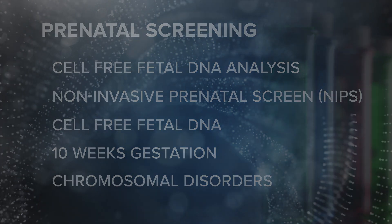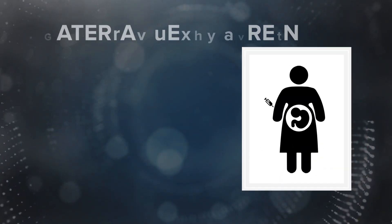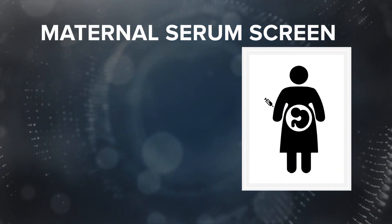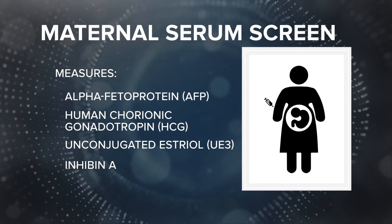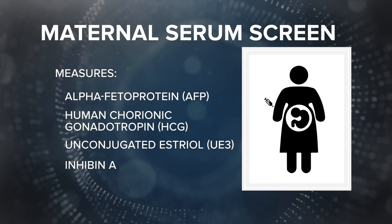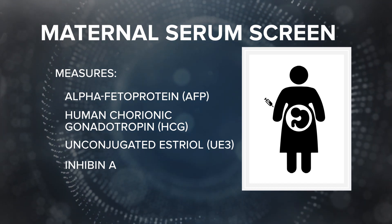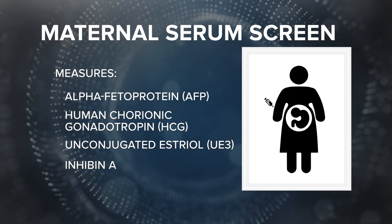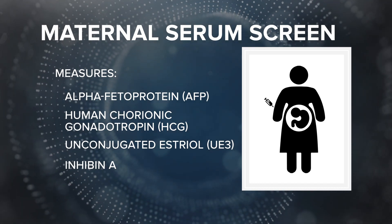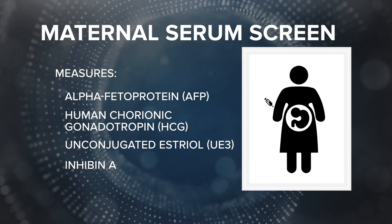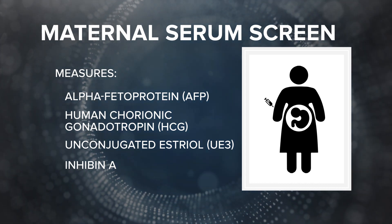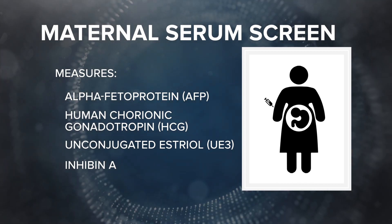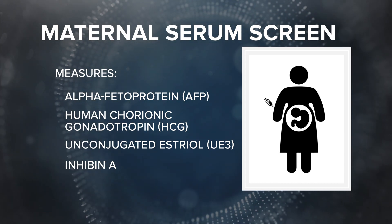A third type of screen, maternal serum screening, is done using a blood draw from the mother's arm during the second trimester of pregnancy. This test measures several substances in the blood sample to determine the risk that the developing baby may have a chromosomal disorder or a neural tube defect.